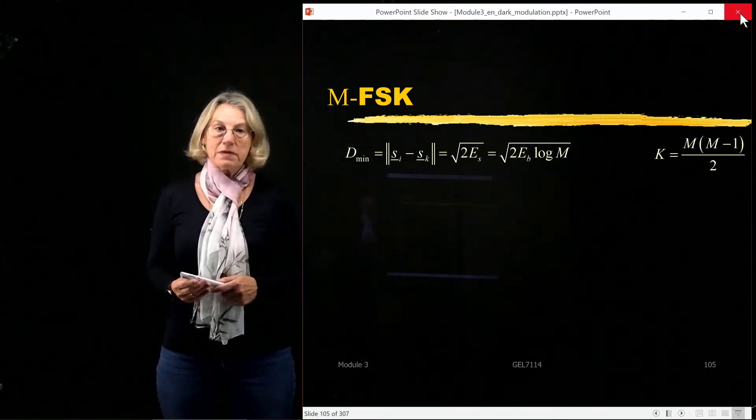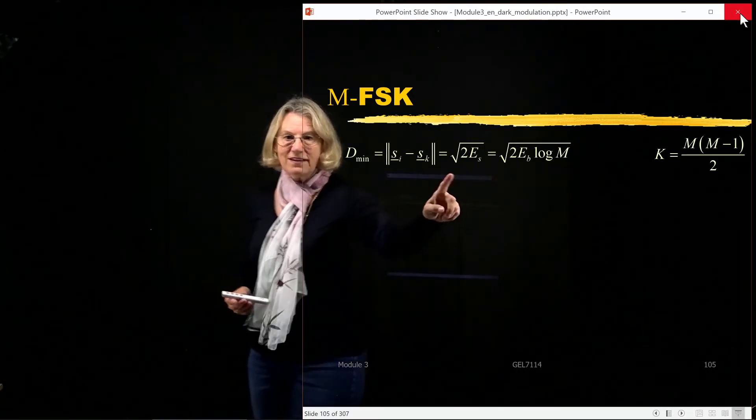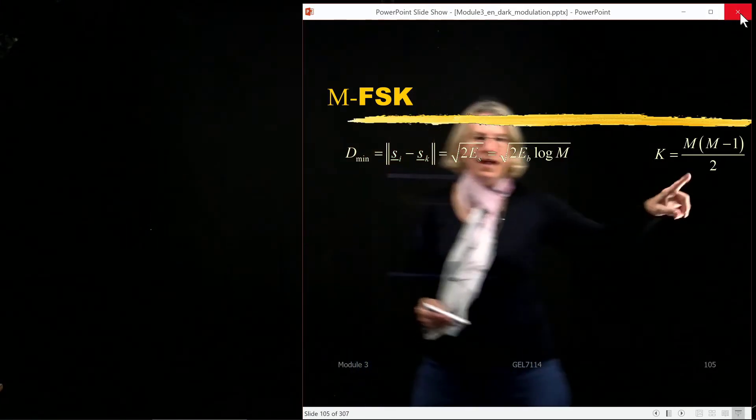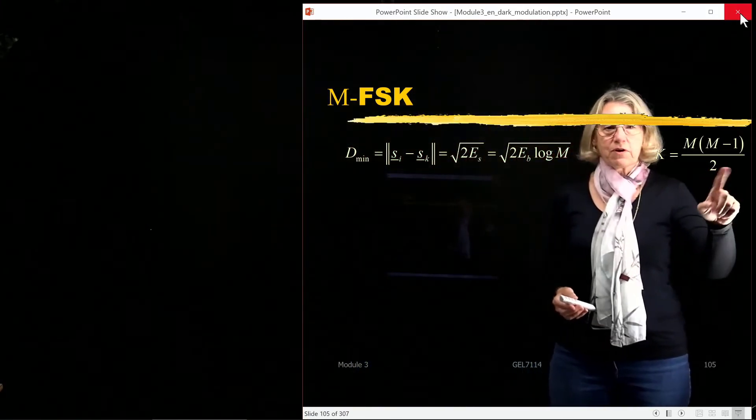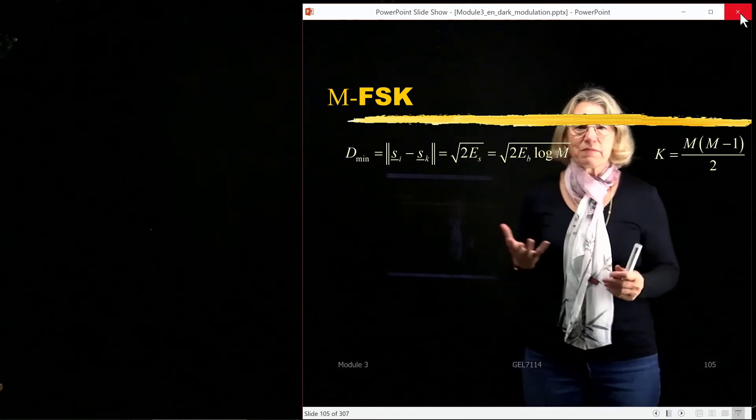and I know the minimal distance, so I have d_min, which is square root of two Es, and I have the number of pairs at the minimal distance.